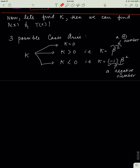Now let's find k. If we can find k, we can easily find X(x) and T(t). It turns out that k can have three values: k can be zero, k can be a positive number greater than zero, or it can be a negative number less than zero.